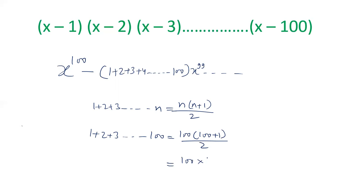So that will be 100 into 101 by 2. The sum will be 5050. This is the coefficient, the value of coefficient of x power 99.